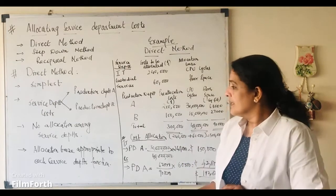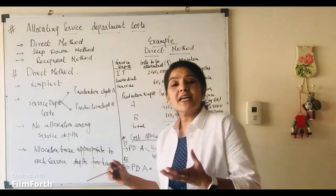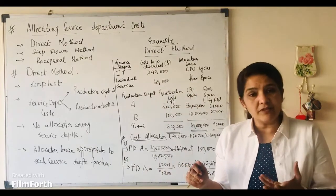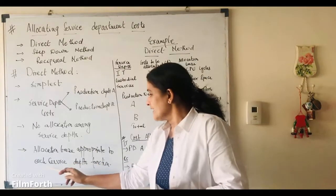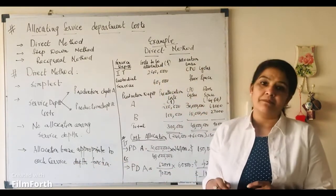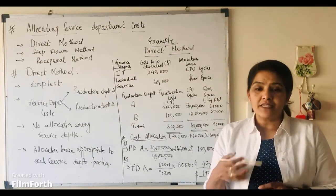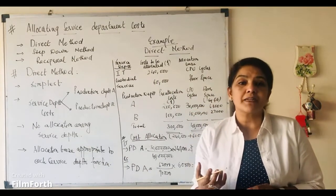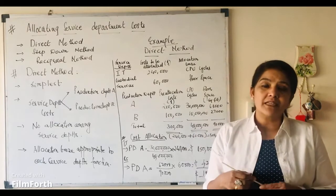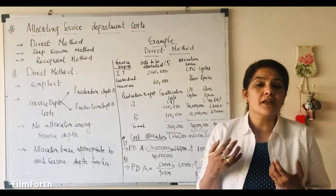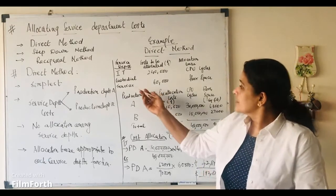The allocation base is decided as one which is appropriate to each service department function. Say for example, if the service department is information technology, the allocation base is taken as CPU cycles, or suppose it is custodial services.